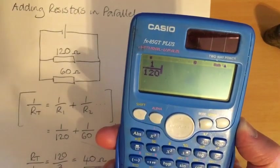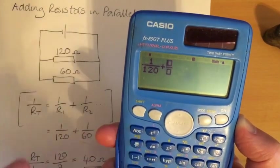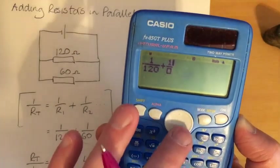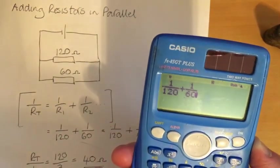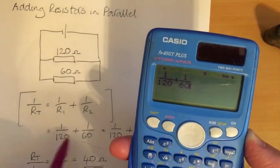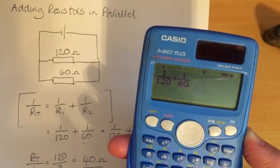Cursor across, plus, we want a fraction again, 1 over 60. So, that sum on my calculator is the same as that sum there. Equals.